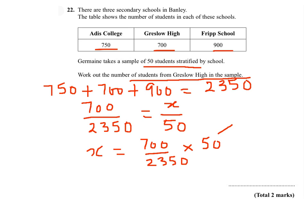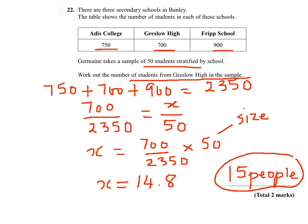As you can see, this is the size of the sample and this is the proportion of students from Gracelow High. So X will equal 14.8, which is approximately 15 people. This is the number of students from Gracelow High in the sample of 50 students.